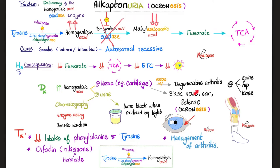Many patients with alkaptonuria have degenerative arthritis — spine problems, hip problems, knee problems — just like osteoarthritis. Whether you call it degenerative joint disease or degenerative disc disease, the pathophysiology is the same: cartilage loss but bone growth with osteophytes.